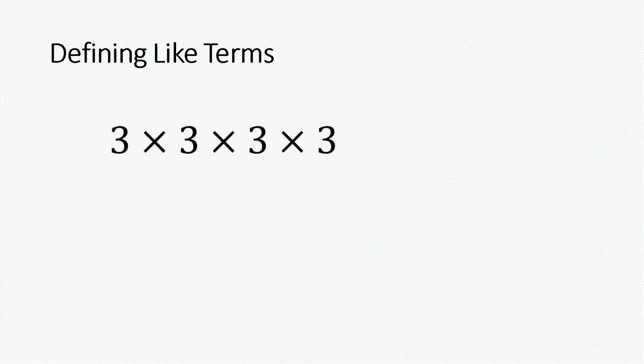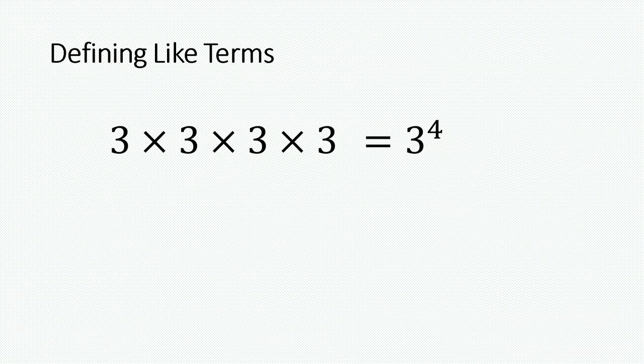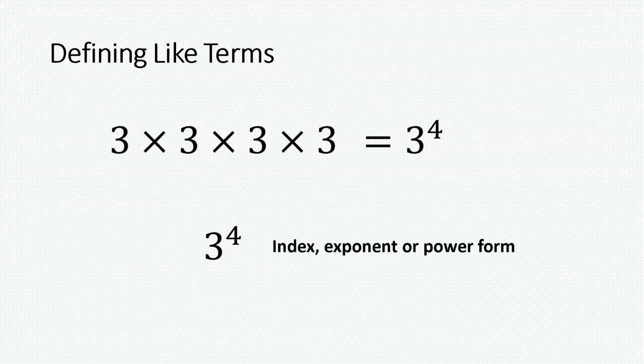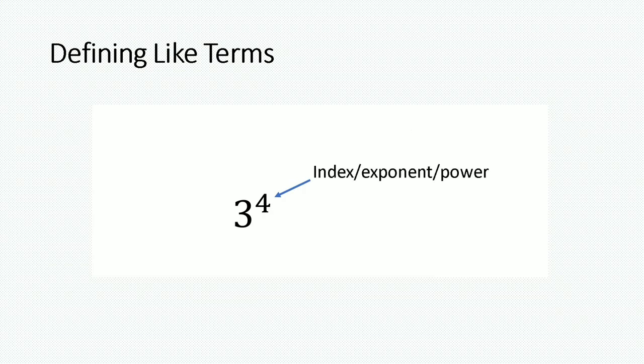In this slide we'll be defining like terms, but before we can do that we need to recall a few things. 3 multiplied by itself 4 times is written as 3 to the power of 4, and this number is written in index, exponential, or power form. The 4 is referred to as the index, exponent, or power, whereas the 3 is the base number.